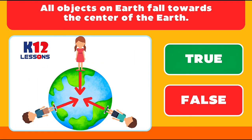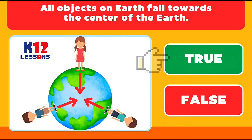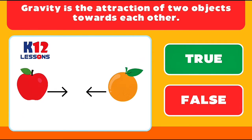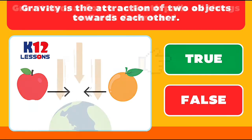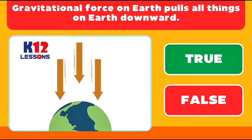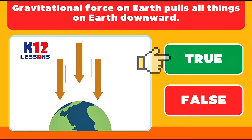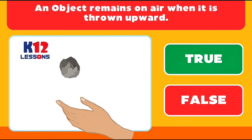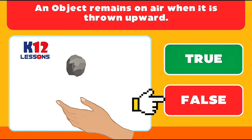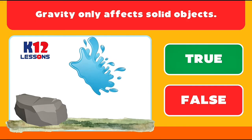Tell whether the statements are true or false. All objects on Earth fall towards the center of the Earth. Gravity is the attraction of two objects towards each other. Gravitational force on Earth pulls all things on Earth downward. An object remains in the air when it is thrown upward. Gravity only affects solid objects.